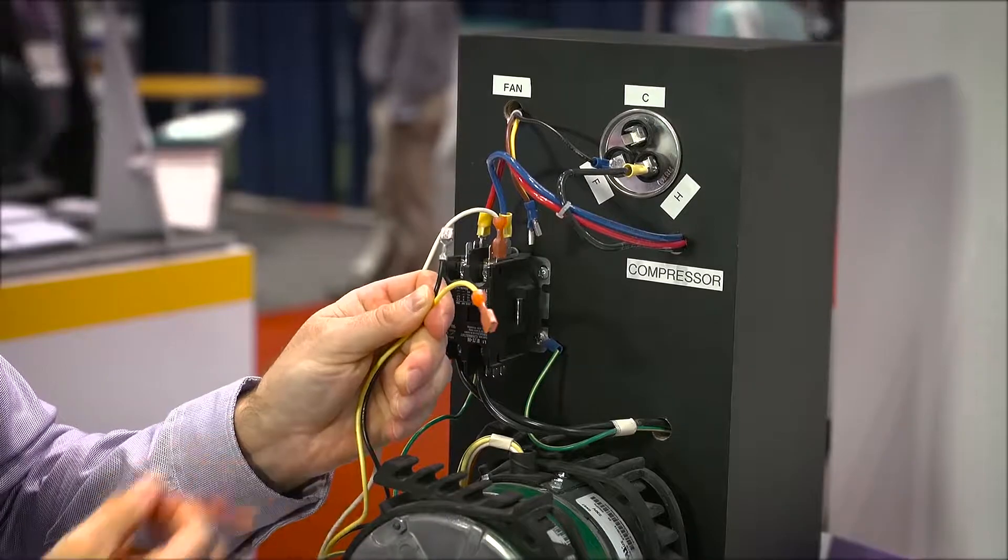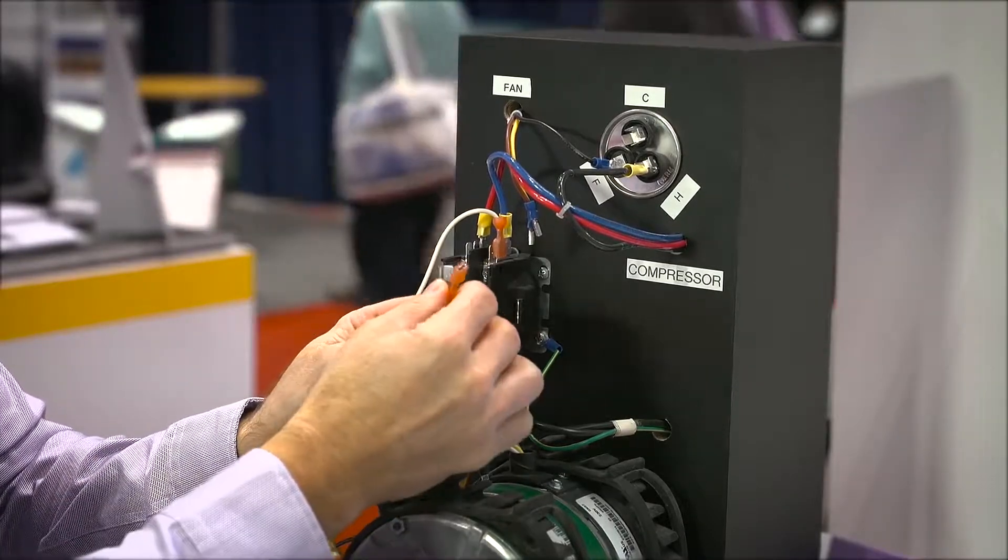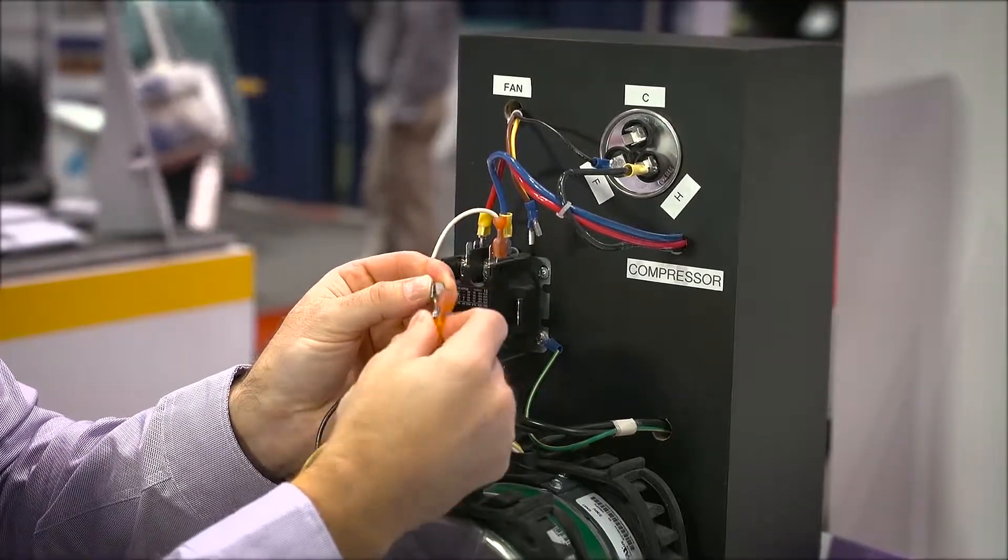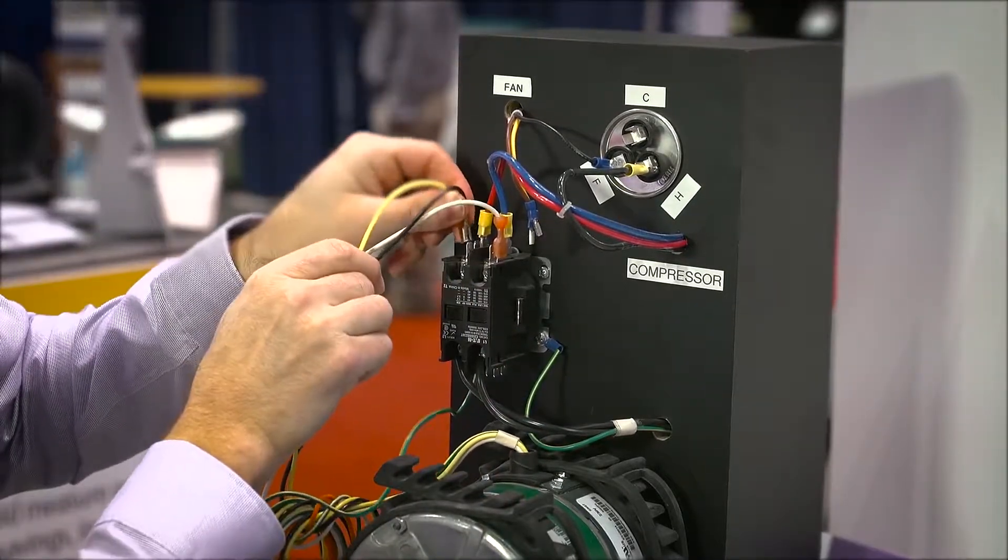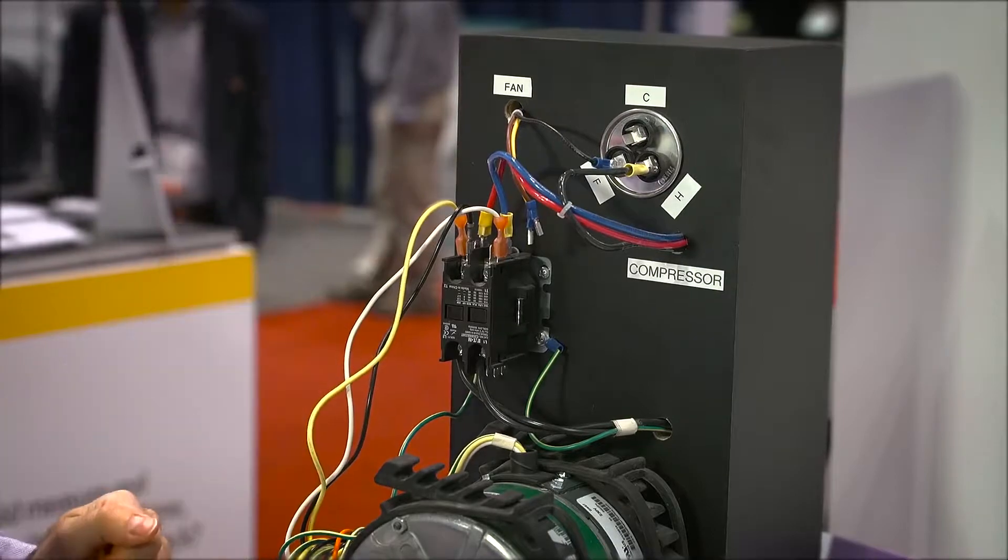So let's say we're going to replace the 6-pole. We're then going to take the yellow wire and place it on the piggyback that's already on the connector. Then we're going to take that connection and put it on the other side of our contactor.